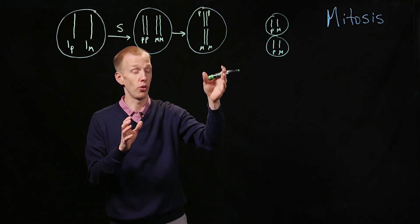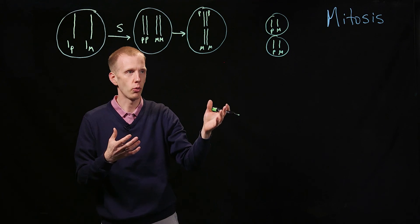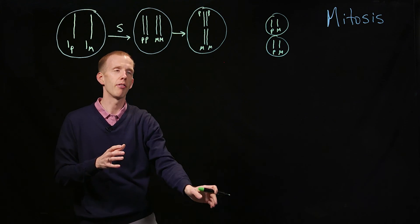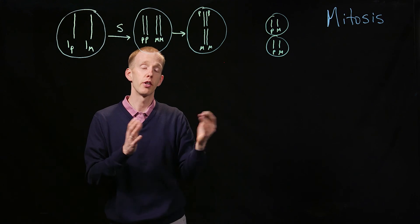And of course, in a cell that has more than one chromosome, like ours, which have 23 pairs of chromosomes, they would all be lined up down the metaphase plate, the middle of the cell that's about to divide.